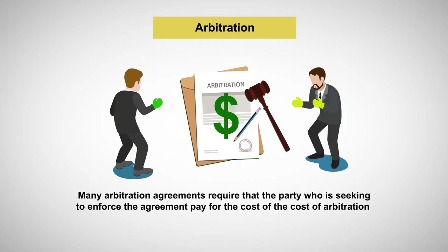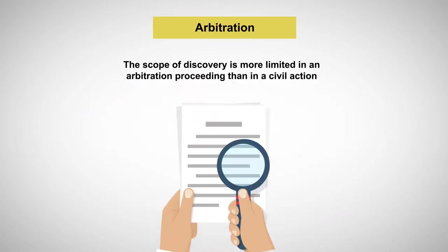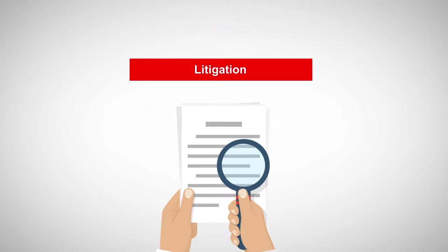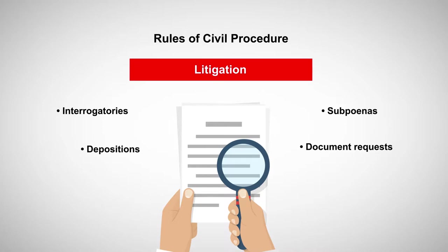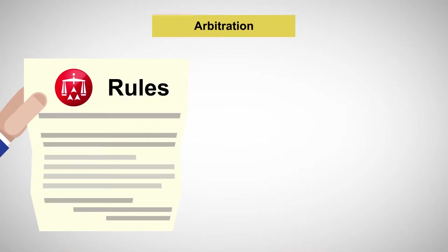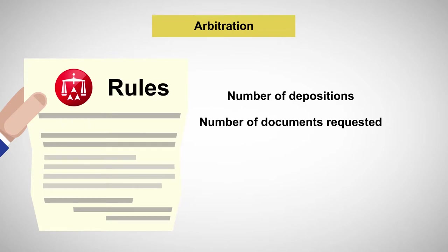However, many arbitration agreements require that the party seeking to enforce the agreement pay for the cost of the arbitration. The scope of discovery is more limited in an arbitration proceeding than in a civil action. If the matter were litigated, the applicable rules of civil procedure would govern the various forms of discovery available, including interrogatories, requests for production of documents, depositions, and subpoenas to compel individuals to testify or produce documents. Instead, the arbitrator follows the rules of the arbitral forum, which address the number of depositions that can be taken, the number of document requests that can be made, and the number of interrogatories that can be propounded.